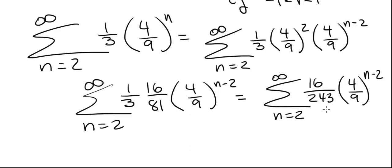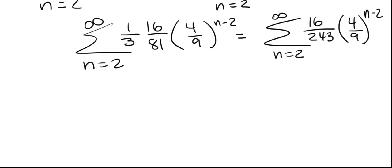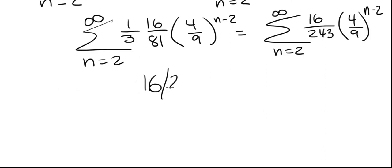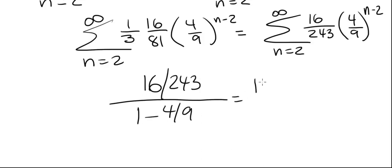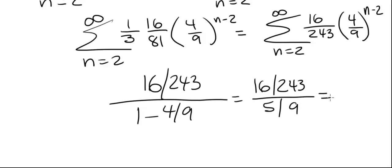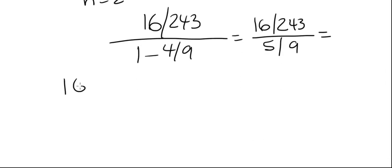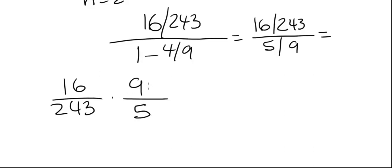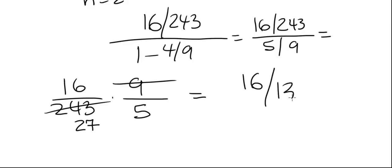Since it is in standard form, we can use the formula. The series converges to a divided by 1 minus r, where a is 16 over 243 and r is 4 over 9. So this is 16 over 243, divided by 1 minus 4 over 9, which is 5 over 9. Simplifying: 16 over 243 times 9 over 5. We cancel the 9 and the 243, leaving 27 in the denominator. 27 times 5 is 135, so the final answer is 16 over 135.